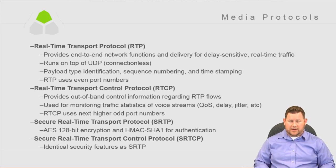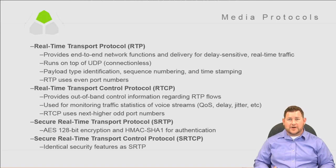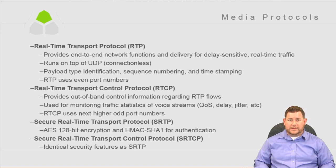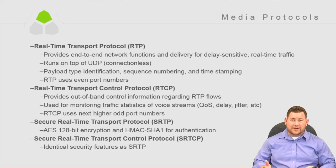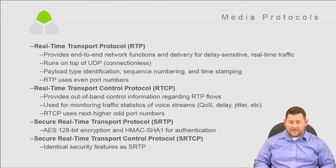Secure Real-Time Transfer Protocol, SRTP, is just the secure version of RTP. It encrypts traffic so you can't use Wireshark to listen on a LAN and capture someone's conversation. It uses AES 128-bit encryption and HMAC SHA-1 for authentication. Similarly, Secure RTCP is the secure version of RTCP.